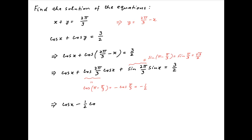Therefore, the given equation becomes cos(x) minus half of cos(x) plus (√3/2)·sin(x) is equal to 3/2. This simplifies to (1/2)·cos(x) plus (√3/2)·sin(x) is equal to 3/2.